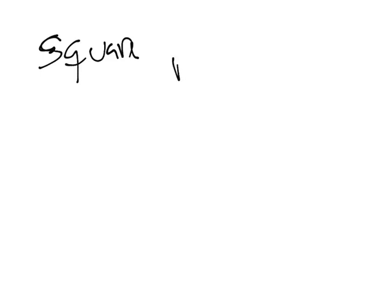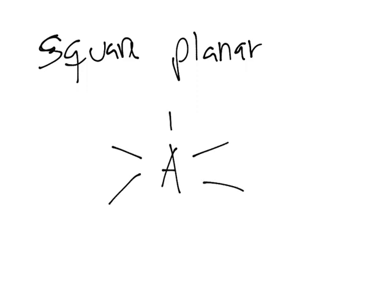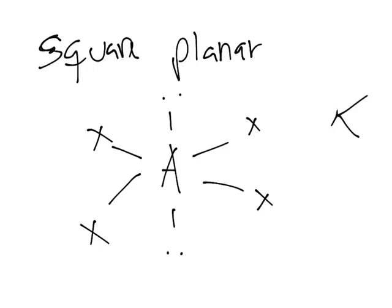Finally, our last case is square planar. We have central atom A with four X atoms bonded to it. You can think of the trigonal planar — we have our Mercedes-Benz sign — and then just add one more atom, making it square planar. It's still like a planar arrangement, just a square. So if you can visualize it, it's really easy to remember these names.